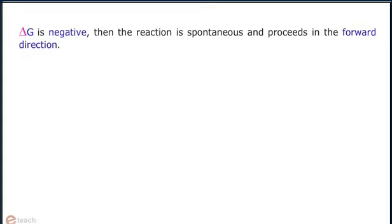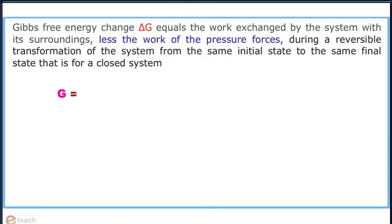If delta G is negative then the reaction is spontaneous and proceeds in the forward direction. Delta G, Gibbs free energy change,